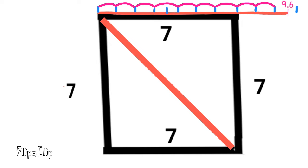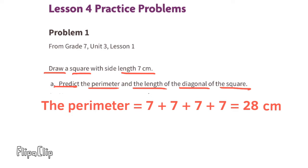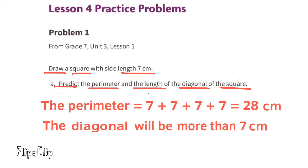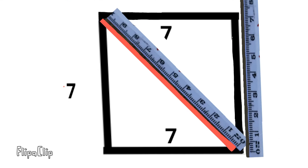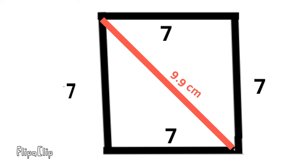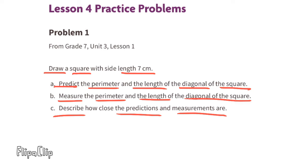Here's nine and a half, and it's a little bit beyond nine and a half — maybe it's about 9.6 centimeters. My prediction for the perimeter is 28 centimeters, and the diagonal line will be more than 7 centimeters. My prediction for the length of the diagonal line is about 9.6 centimeters. Measuring the perimeter: 7 times 4 equals 28 centimeters, and the length of the diagonal line is 9.9 centimeters.